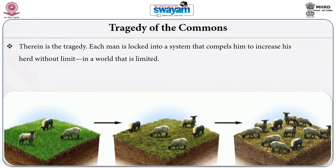Each individual household has an incentive to keep adding animals, and so does every other herdsman. When everybody has, say, 8 or 10 animals each, the resource system collapses. That is the tragedy of the commons — because everybody tries to maximize their own benefit, the productivity of the shared resource declines and everybody loses.